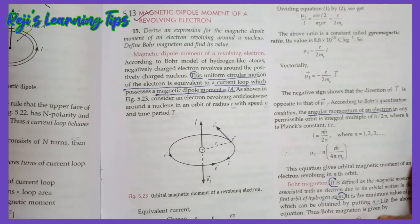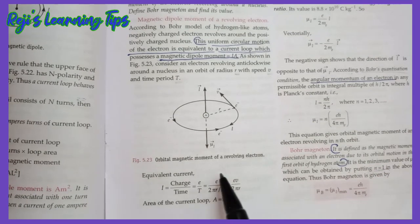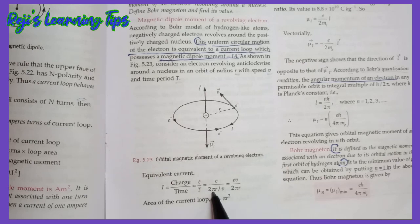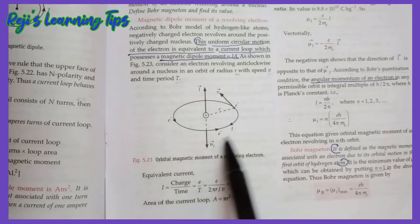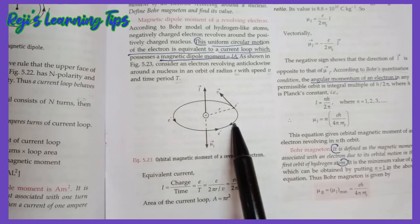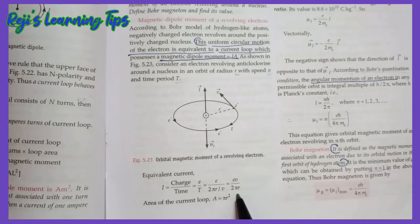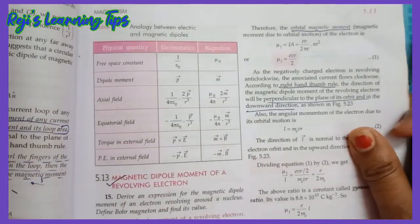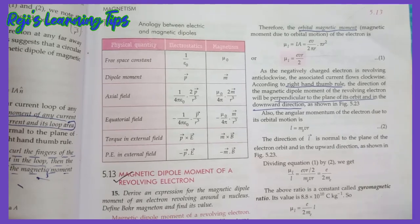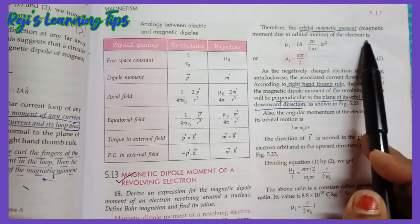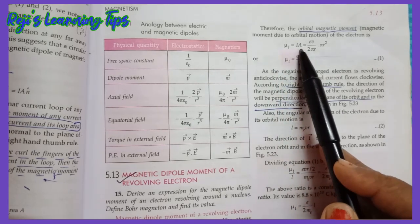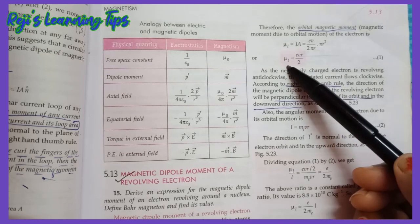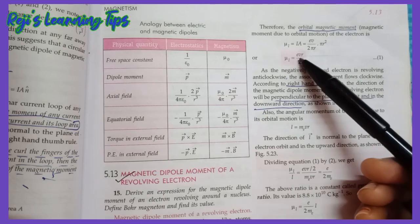The current I equals charge divided by time equals e divided by T, and the time period T equals 2πr/v. So I equals ev/(2πr). The area of the current loop A equals πr². The orbital magnetic moment of the electron μₗ equals I times A equals (ev/2πr) times πr². Cancelling π and r, we get μₗ equals evr/2.